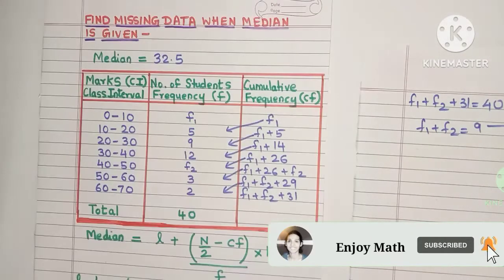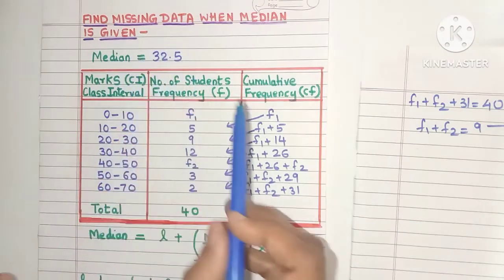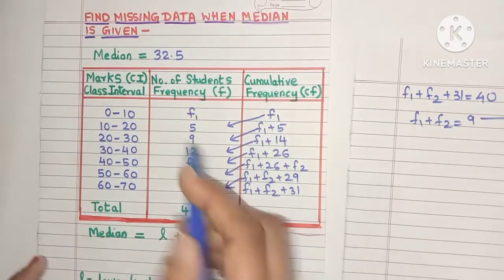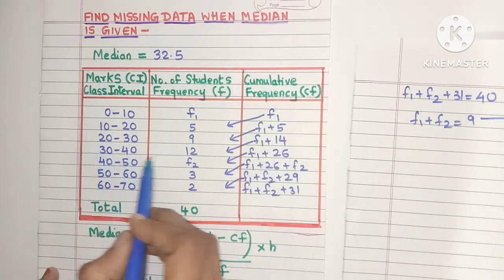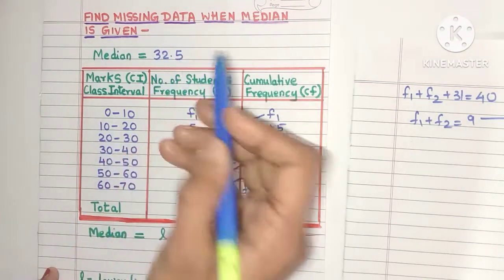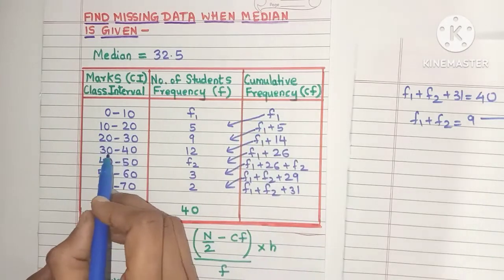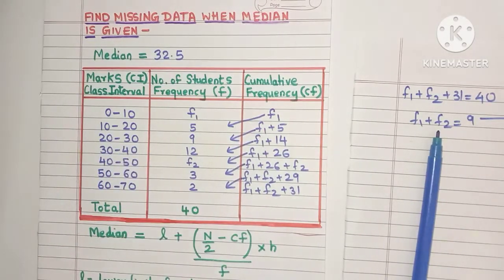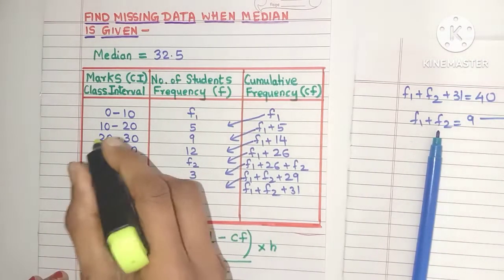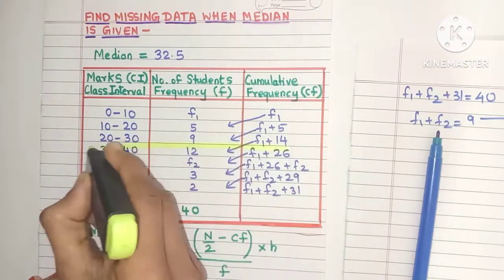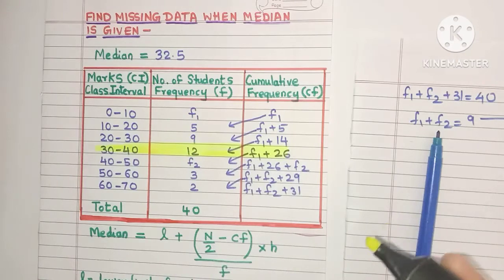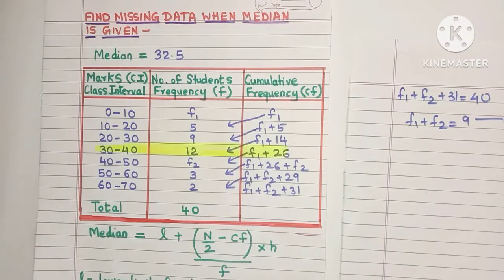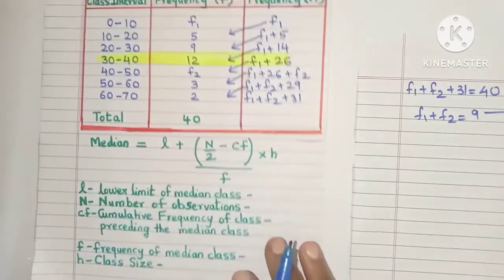Now let's come back to the median value. The median is 32.5. In which class interval will 32.5 lie? It will lie in the class interval 30 to 40, because 32.5 comes between 30 and 40. So this is our median class. Finding the median class is very easy when you already know the median value.